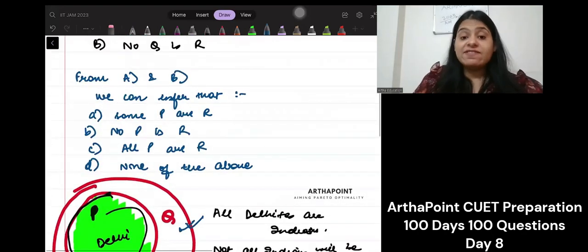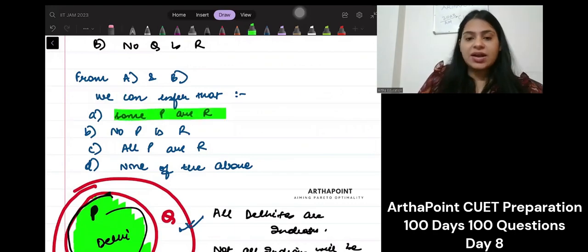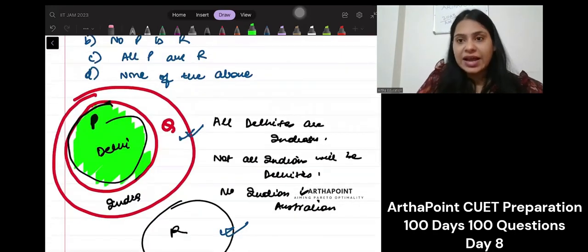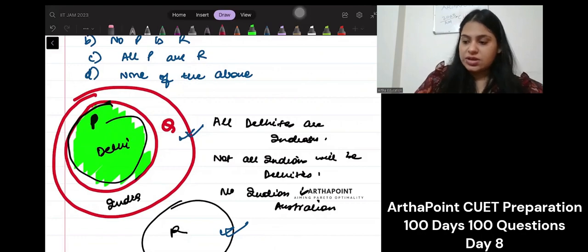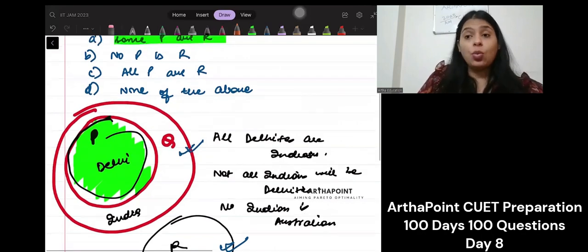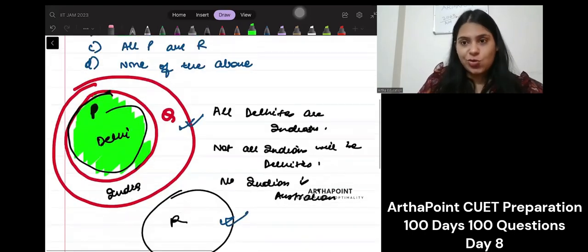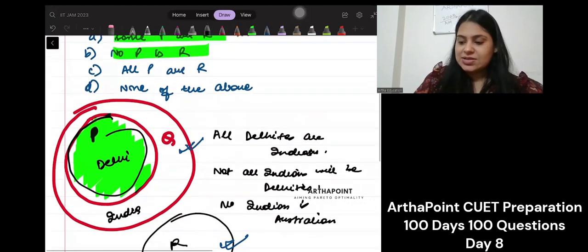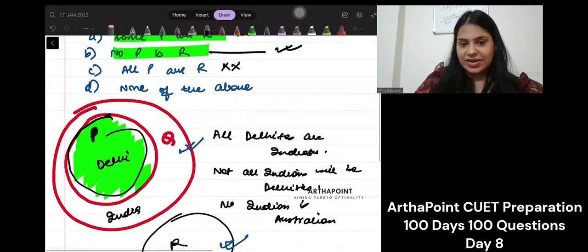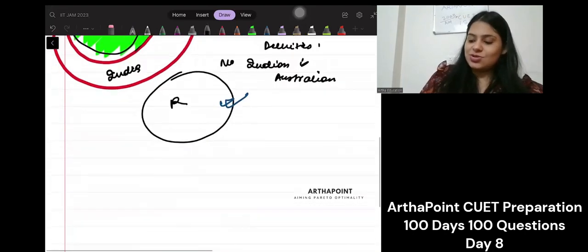From this, what can we infer? Some P are R, no, no, no. If Delhiites are Indians, they cannot be Australian. So this is incorrect. Taking an example will help you in such questions. This is incorrect. No P is R. Absolutely correct. Because P are Q. Delhiites are Indian. So they cannot be Australian. So this is correct. All P are incorrect. None of them incorrect. So the answer to this question is B.